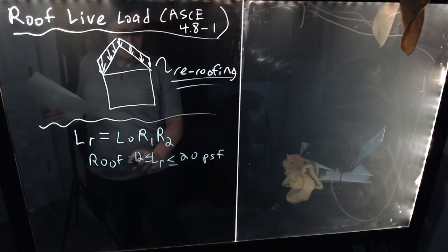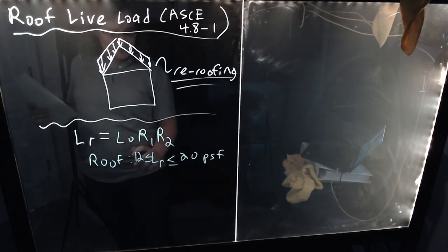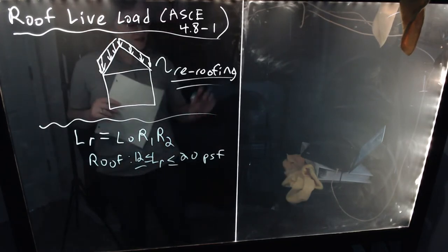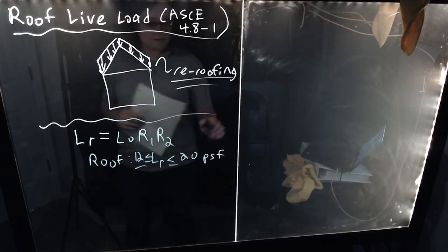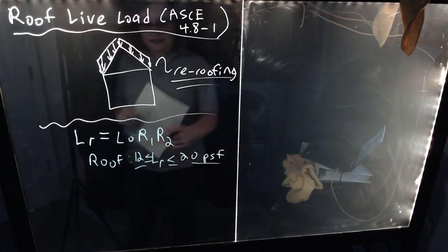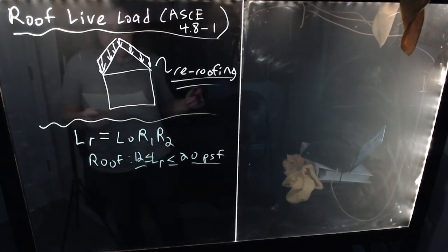So in other words, if your unreduced value is between 12 and 20, is less than or equal to 20, you use this procedure. And then it has, but even then your final value is going to have a minimum value of 12 PSF. So the way to make sense of this inequality is really that you can only apply it if your roof value is less than or equal to 20. Your initial unmodified LR is less than or equal to 20. And then afterwards, you're going to come back and check to make sure whatever value you calculate is greater than or equal to 12.